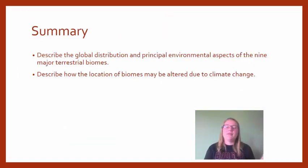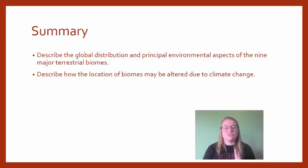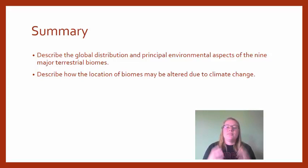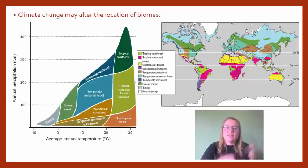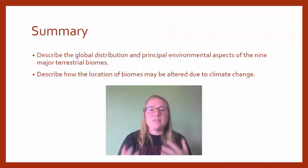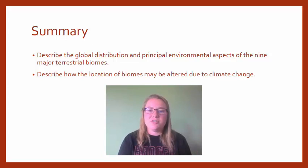So in summary, you should be able to describe the global distribution and the main environmental aspects of each biome — which ones have more moisture, which have hotter temperatures, which have goofy characteristics associated with them. You should also be able to describe how the location of biomes could be altered with climate change: if we have warmer temperatures or more or less precipitation, that's going to move where those biomes can be found on the graph. Please leave your questions, comments, thoughts, and feedback, and I'll address them as soon as possible.